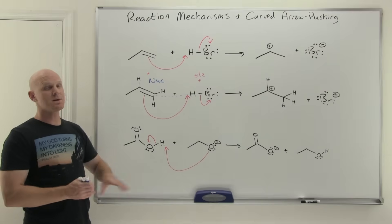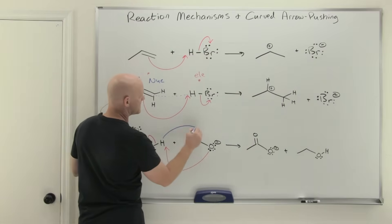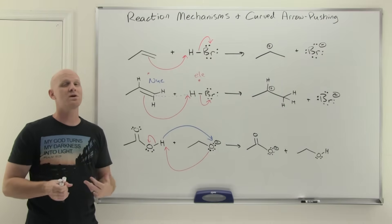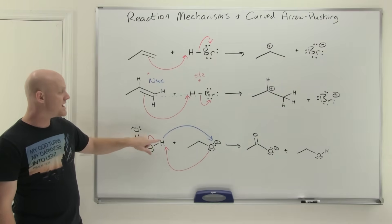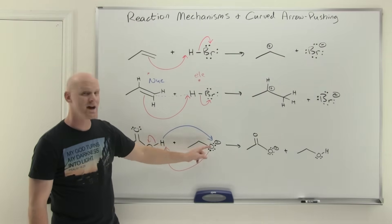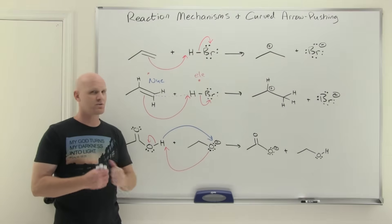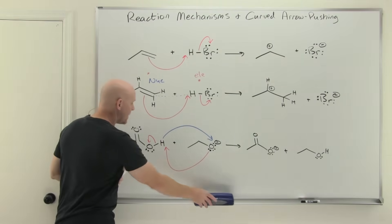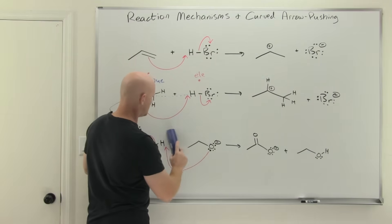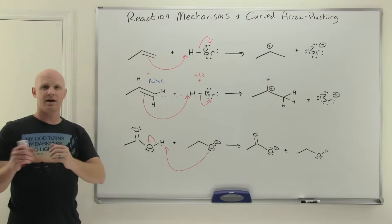For the arrow pushing: oxygen with three lone pairs uses one lone pair to pull the hydrogen over, making a new bond between that oxygen and hydrogen. Since hydrogen can only make one bond, the old bond must break, and those two electrons go to the other oxygen as its third lone pair. A common rookie mistake is to start the arrow from the hydrogen itself — but arrows should never start from an atom without a lone pair. Every arrow must originate from electrons, not from an atom directly.